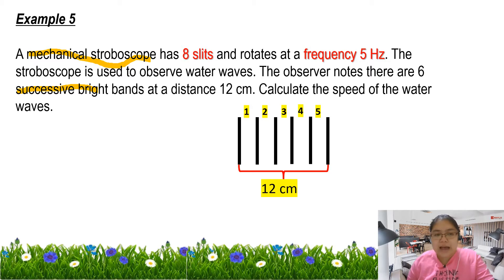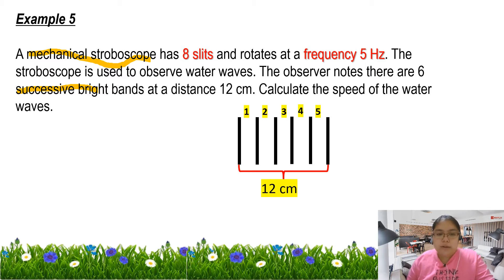Remember, if I say 7 successive bright bands, that means inside there are 6 lambda. You need to minus 1 because we want to count the distance between. So from the info, we have frequency. Then we have lambda already. They need to find the speed — V equals F lambda.